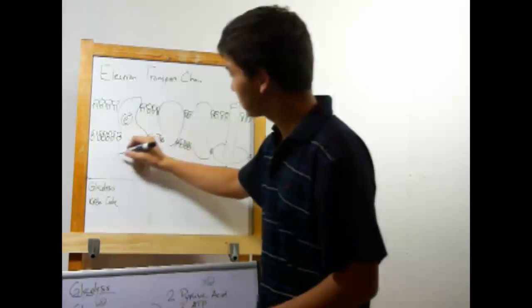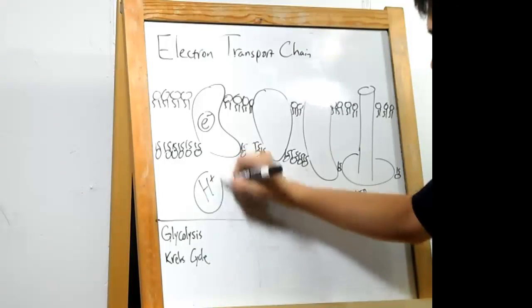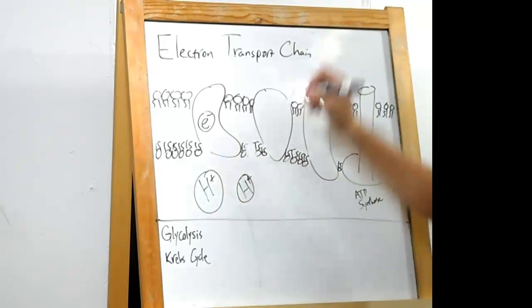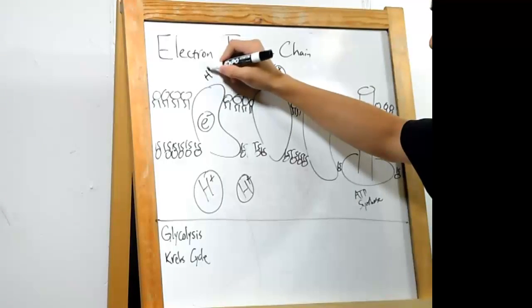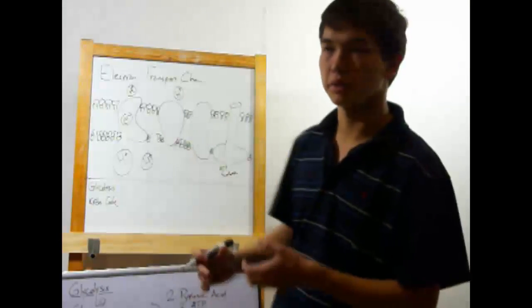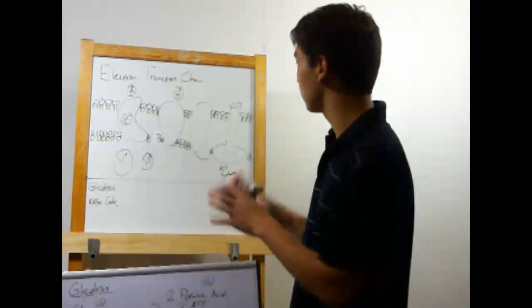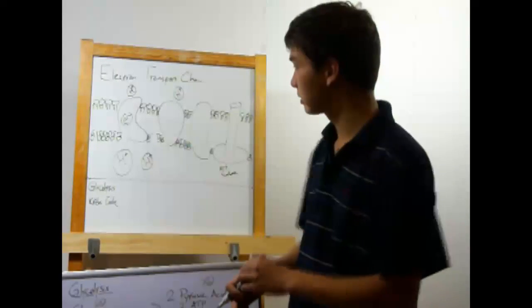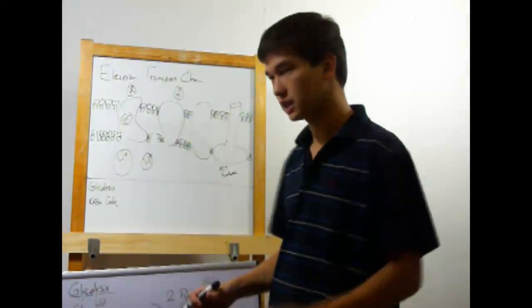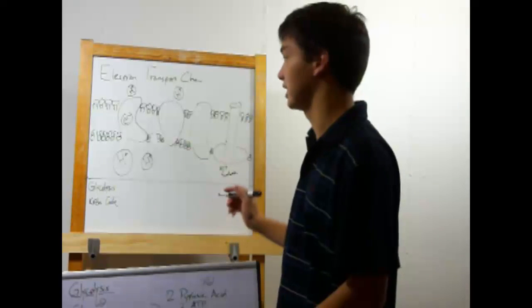Now, the environment of the mitochondria has a bunch of H plus ions floating around. They're charged, hence the plus, and so they can't move through the membrane. Remember, membranes do not allow charged or polar atoms or molecules to move through. Instead they'll have to go across protein channels, and that's just what the electron transport chain does.